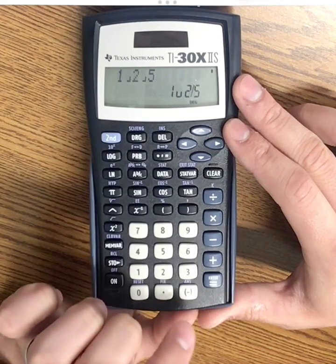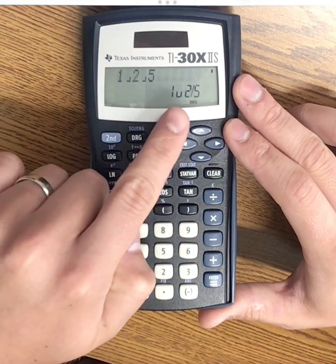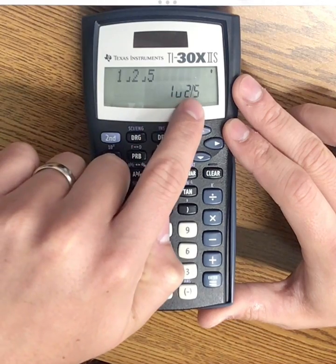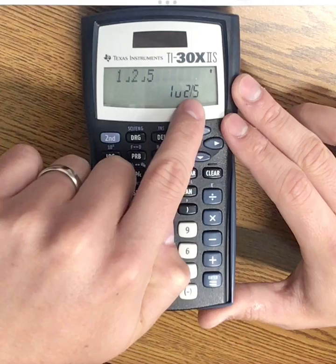So this is saying one and two-fifths. And if you press enter, you'll notice the little U is representing the difference between the whole number and the fraction following it. So this is one and two-fifths.